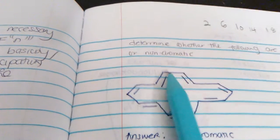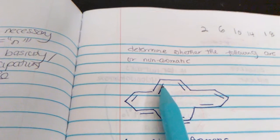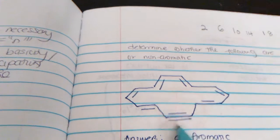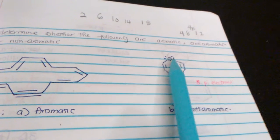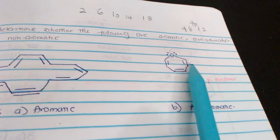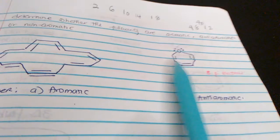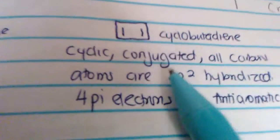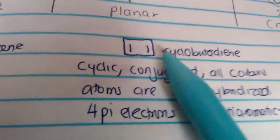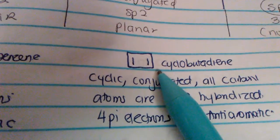If you count the bonds in a ring and get an odd number, it's aromatic. If you get an even number, it's anti-aromatic. For example, cyclobutadiene has 1, 2 bonds — that's an even number, giving 4 electrons — so it's anti-aromatic. Counting bonds in another example gives 1, 2, 3, 4 — an even number — and 8 electrons, making it anti-aromatic.